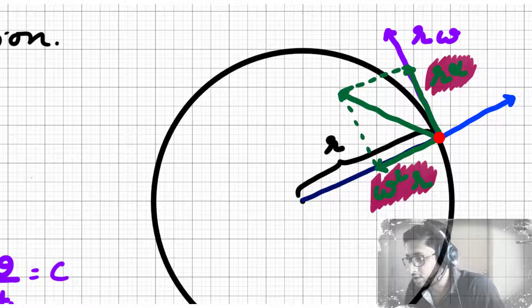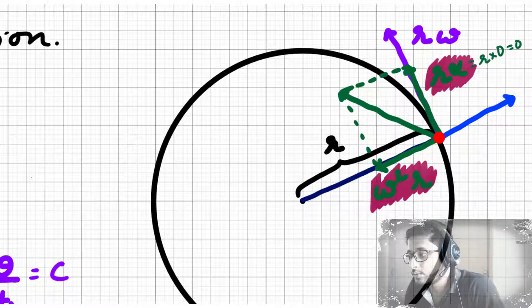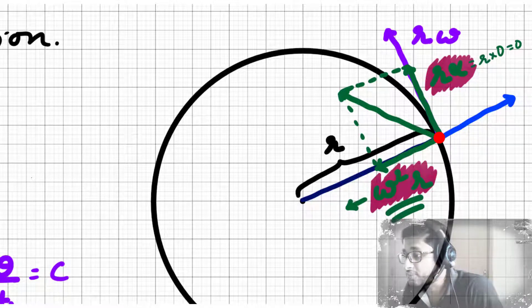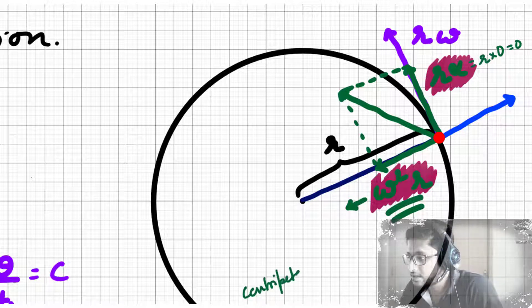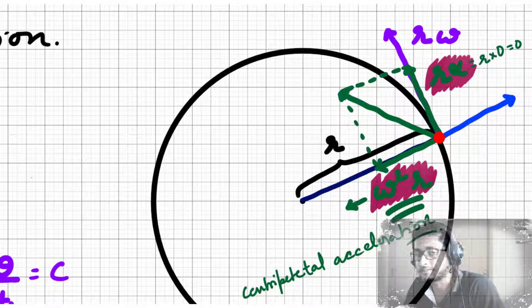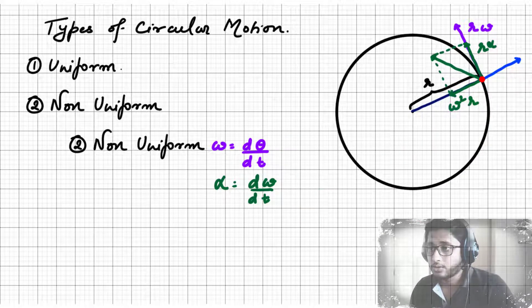If we put the value of angular acceleration, which is zero in this case, into the equation, the tangential acceleration becomes zero. So the only acceleration we have left is the acceleration in the direction opposite to the radial unit vector, also known as centripetal acceleration, which is essential to keep the particle in a circular path.